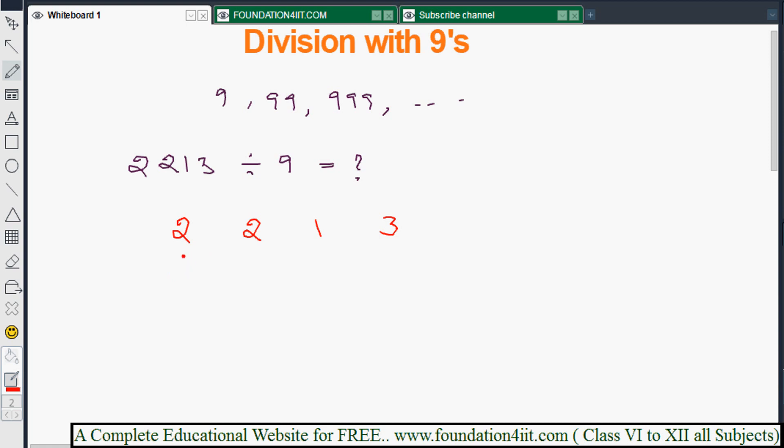The first step is to write the first number 2 as is. Then add this 2 and the next number. So 2 plus 2 is 4. The first number stays as is, then you add it with the next number.